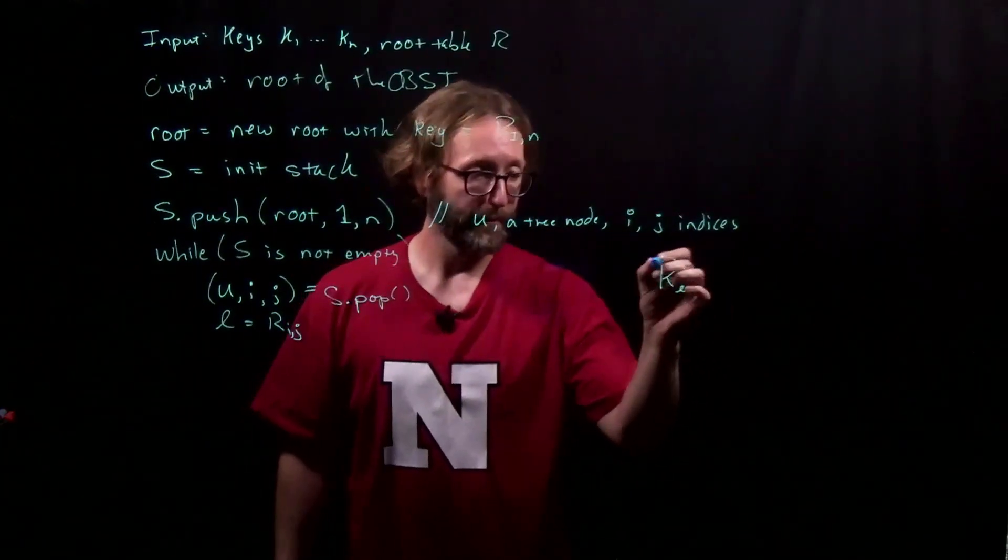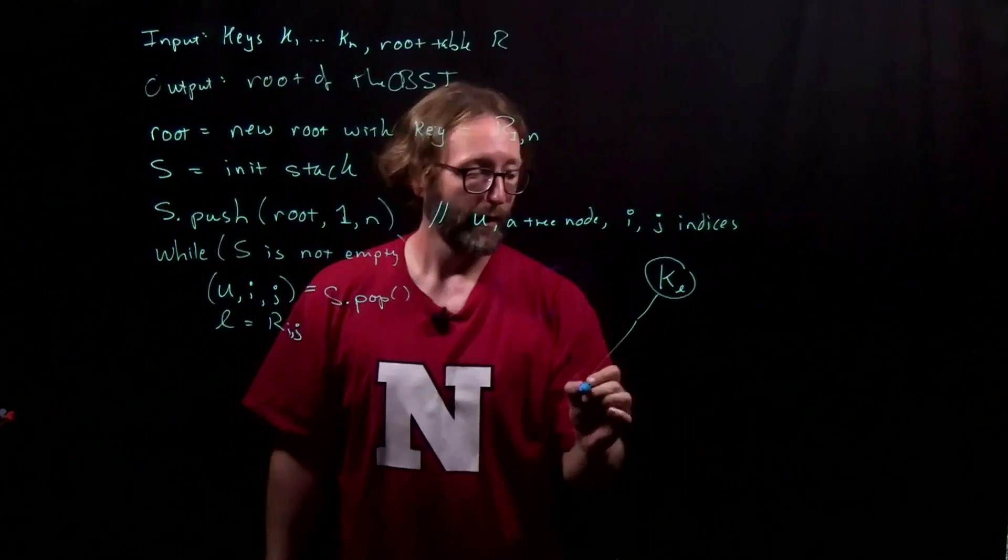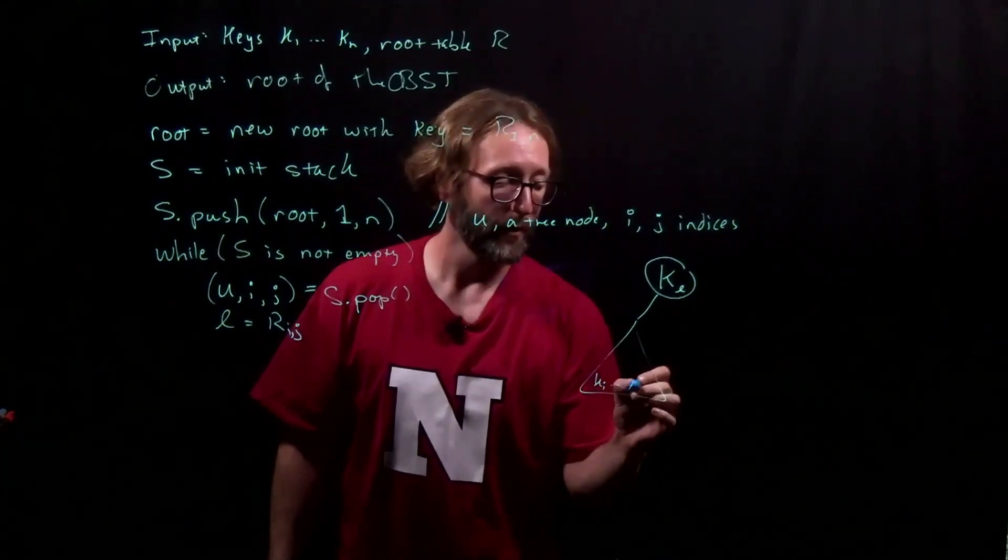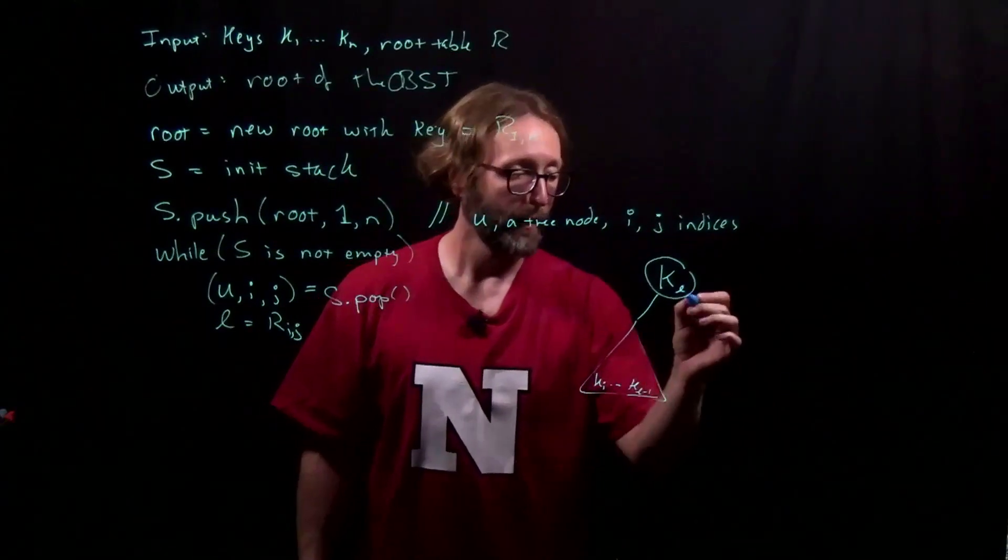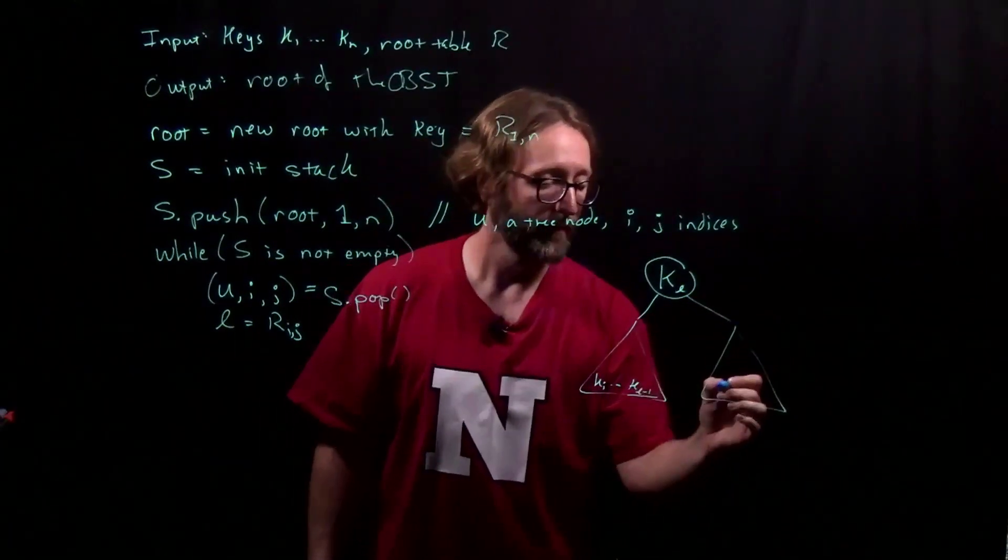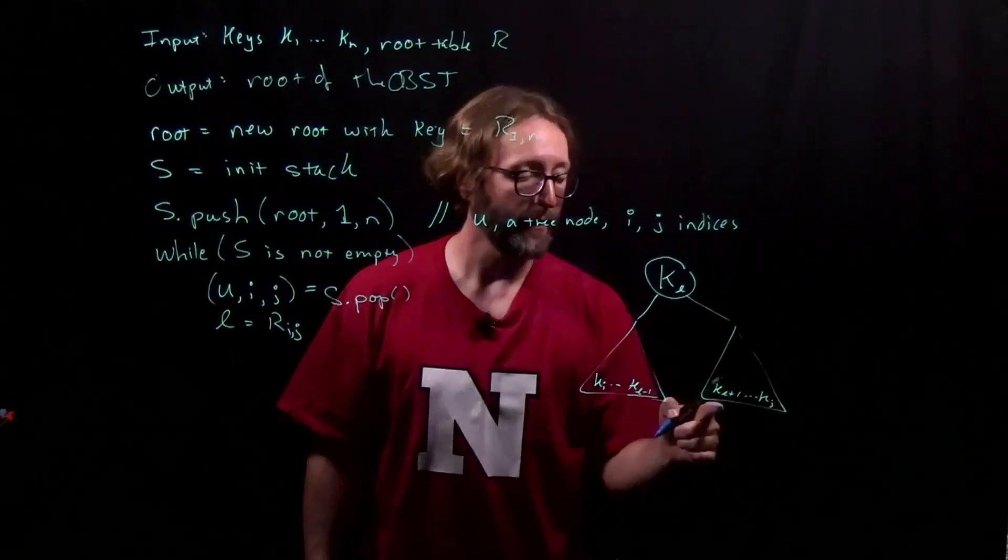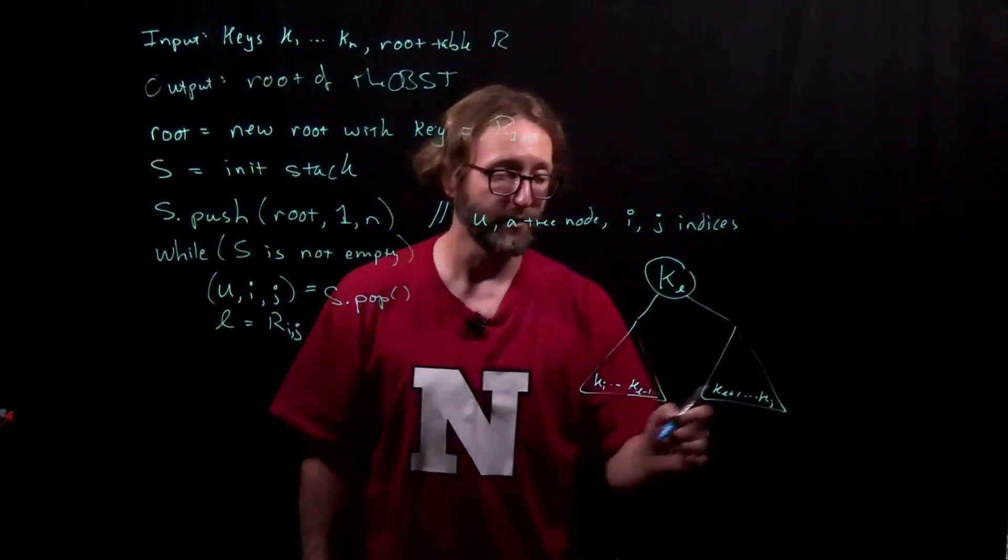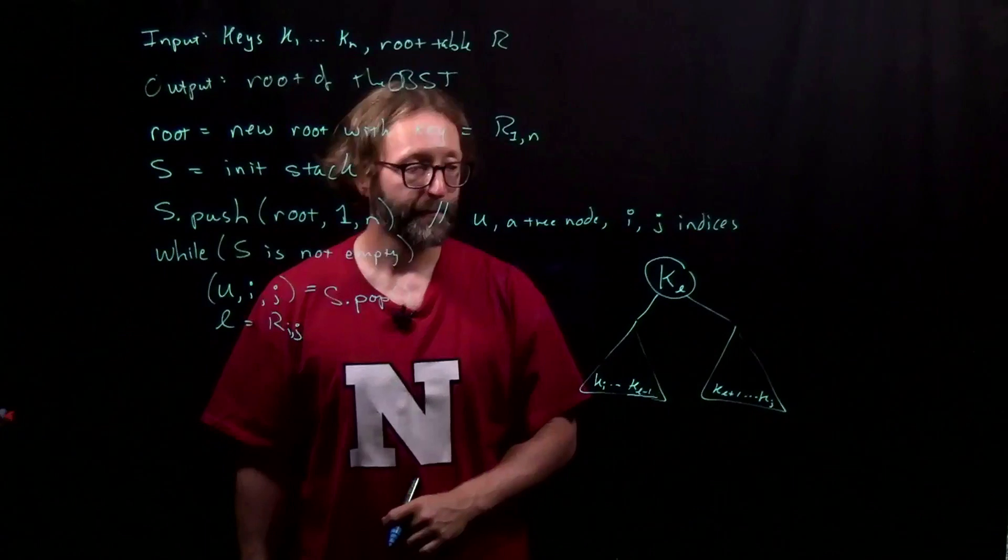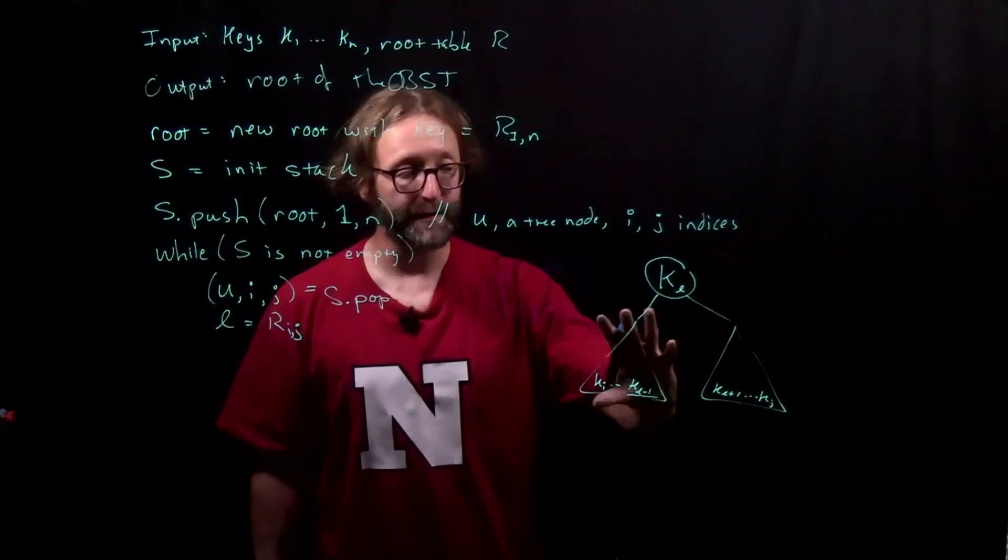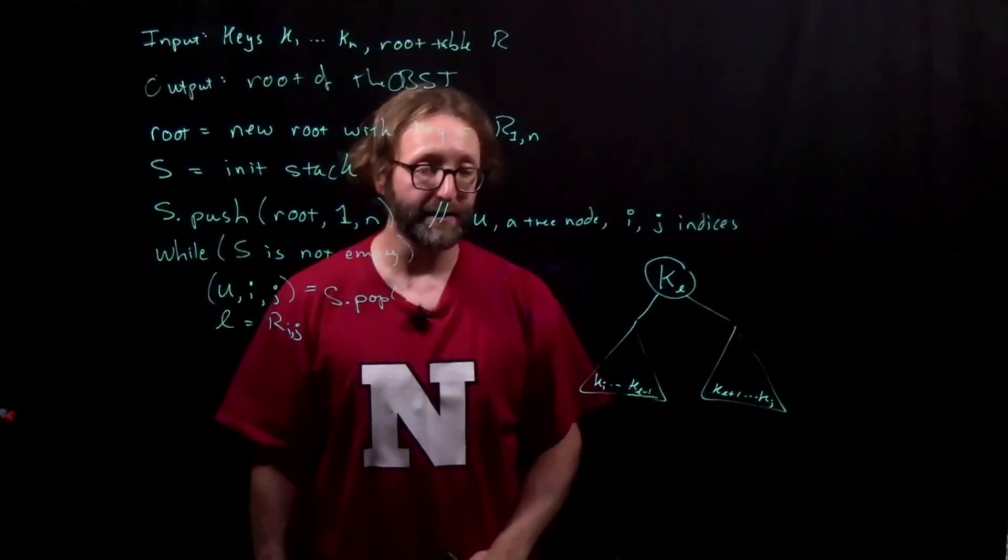Now we have some decisions to make. K sub l is our root, and in the left subtree, we have key values i through l minus 1. And in the right subtree, we have values k sub l plus 1 through k sub j. When do we know we have a left subtree to process, and when do we know we have a right subtree to process?